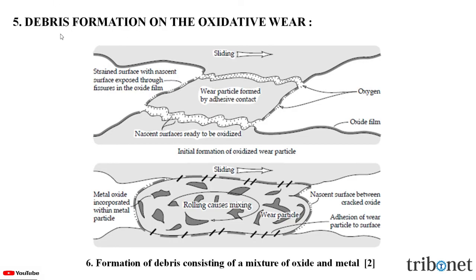Now let us understand the formation of debris consisting of a mixture of oxide and metal. When the temperature is progressively increased from close to ambient to several hundred degrees Celsius, oxidative wear of metal becomes more intense. The time necessary for the development of wear protective compacted oxide layers is reduced and the quantity of oxidized wear particles and the thickness of the oxide films are dramatically increased. Usually, the fractured fine metallic debris which remains on the worn surface is oxidized and compacted into a glaze. As the glaze spreads over the worn surface, the wear process becomes very mild. A practical example can be seen in the formation of wear in gas turbine components, where thermal cycling causes slow periodic movements between contacting surfaces.